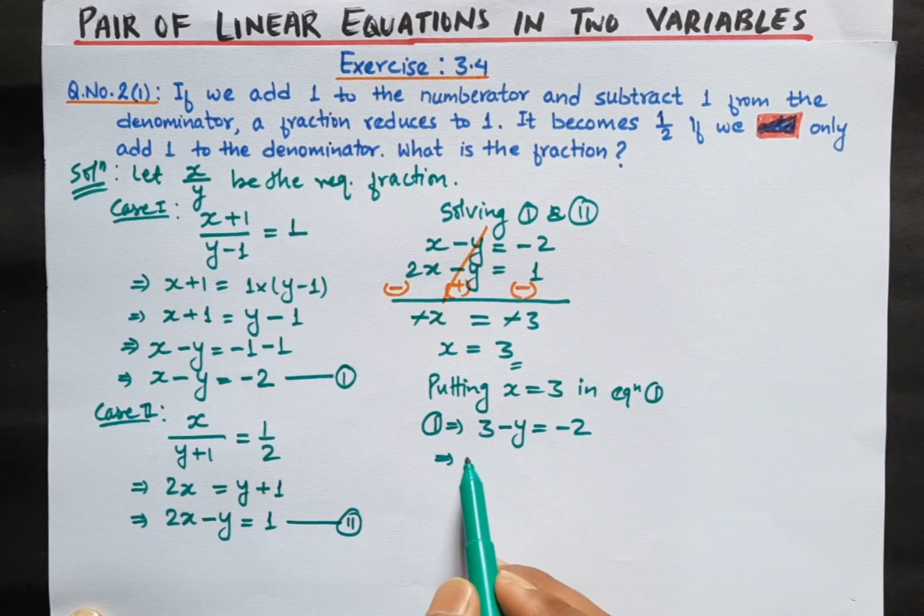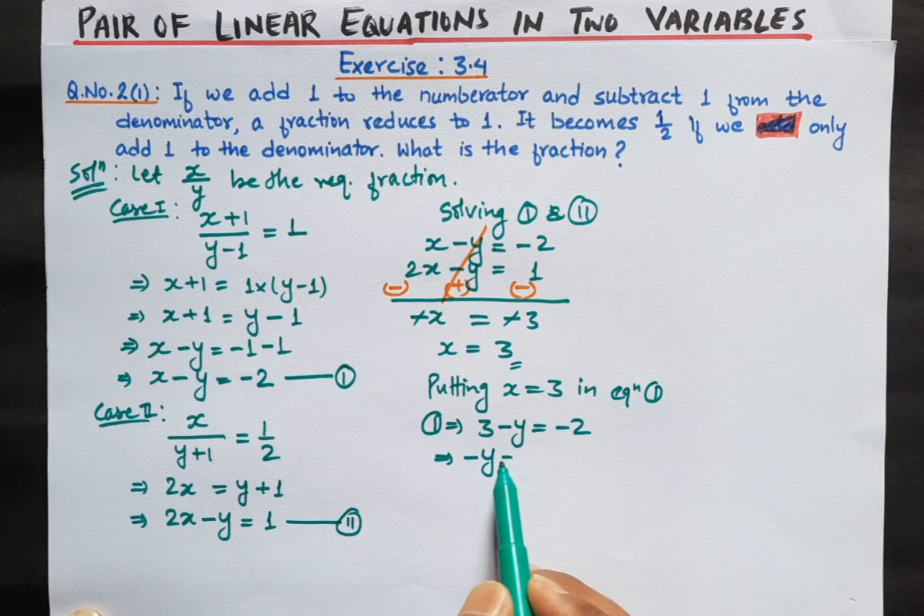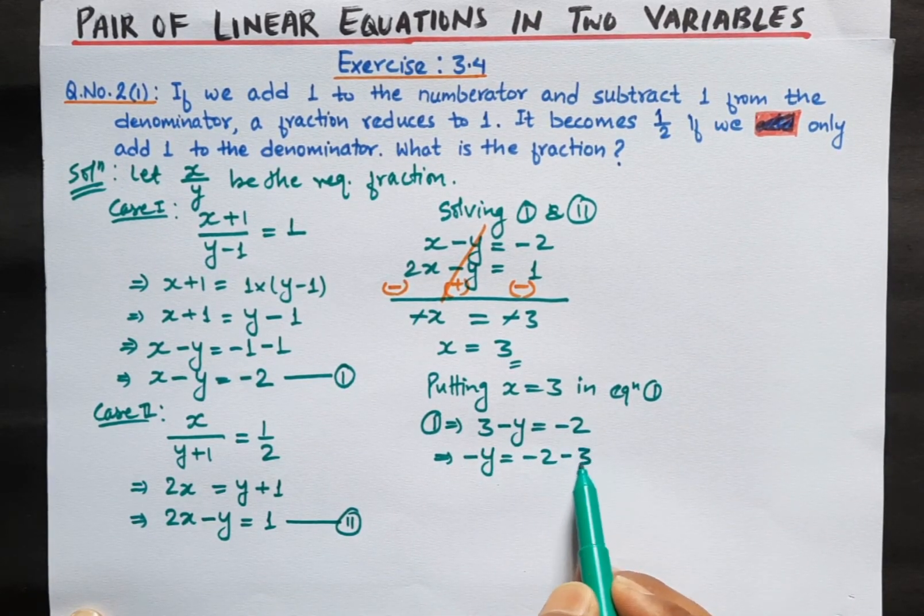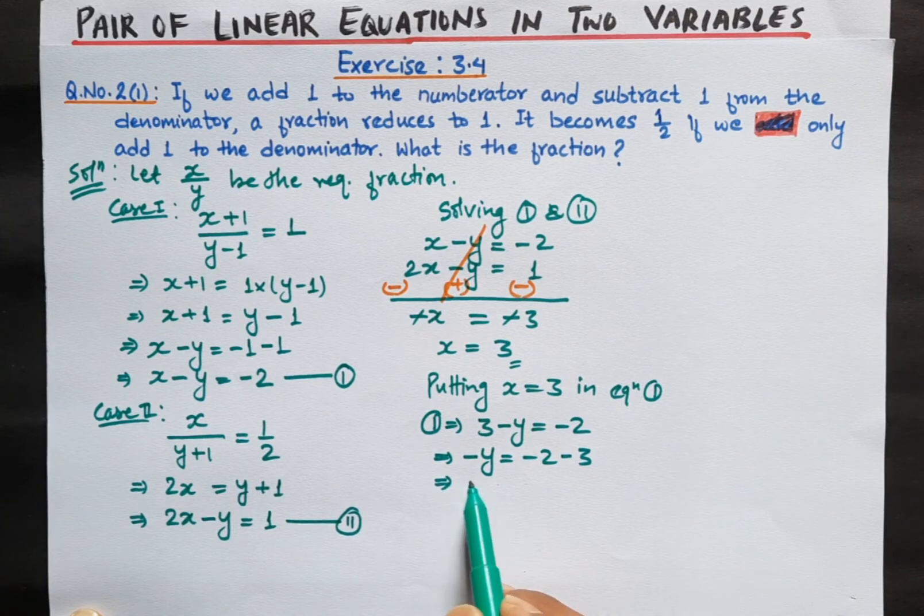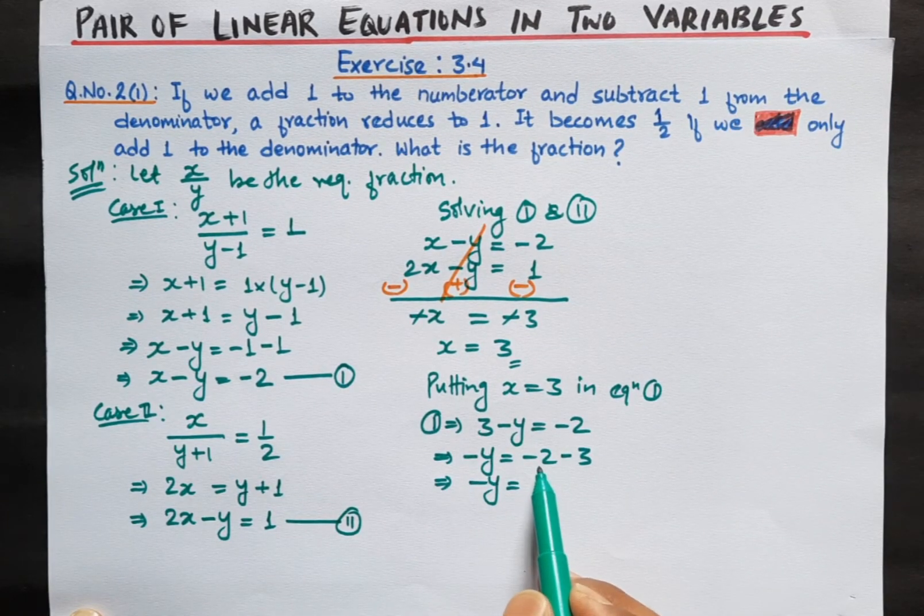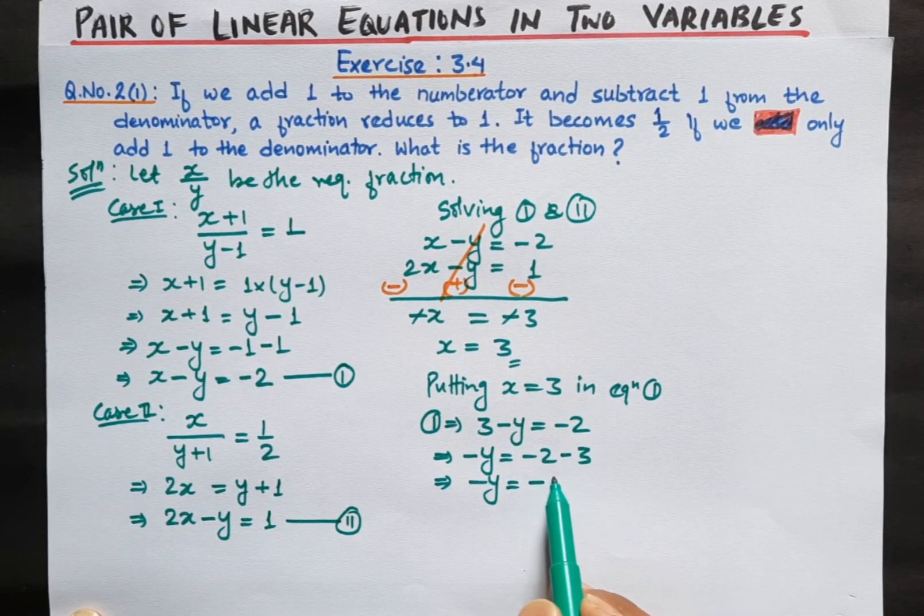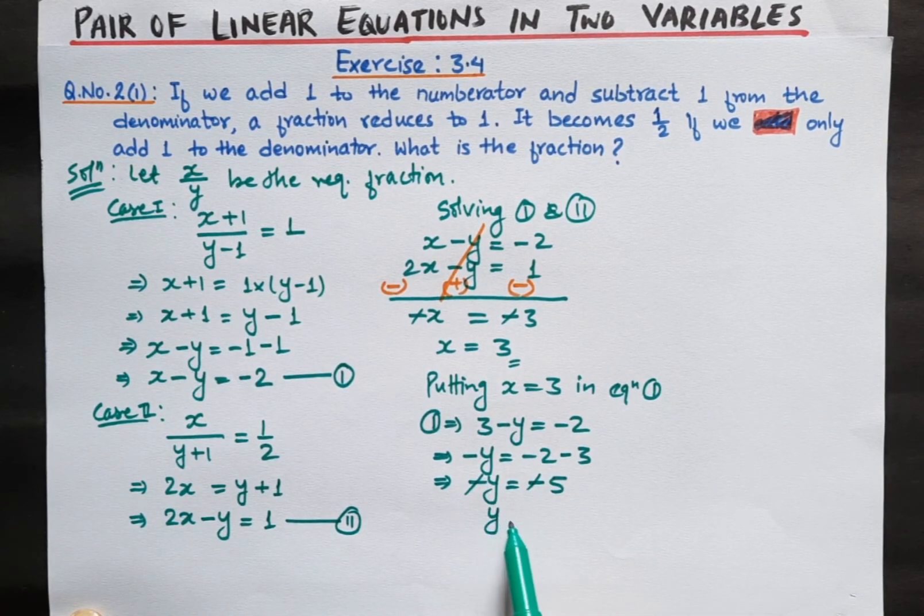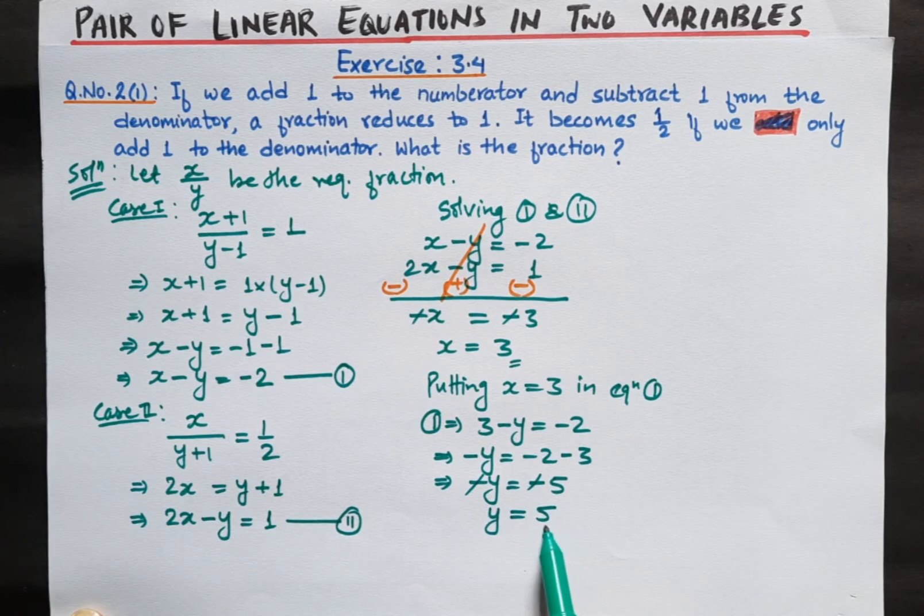Transposing 3 to the right hand side, we get minus y equals minus 2 minus 3, which is minus 5. The minus signs cancel, so y equals 5.